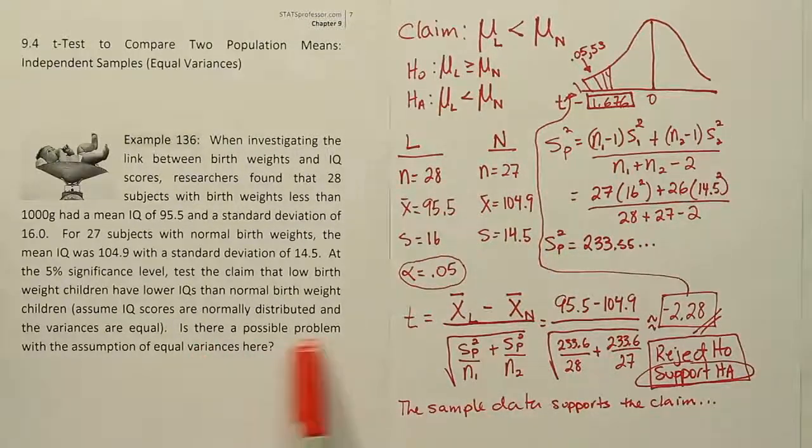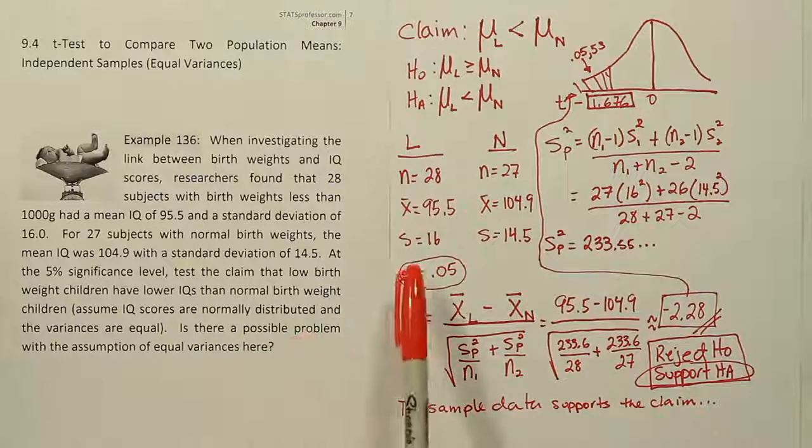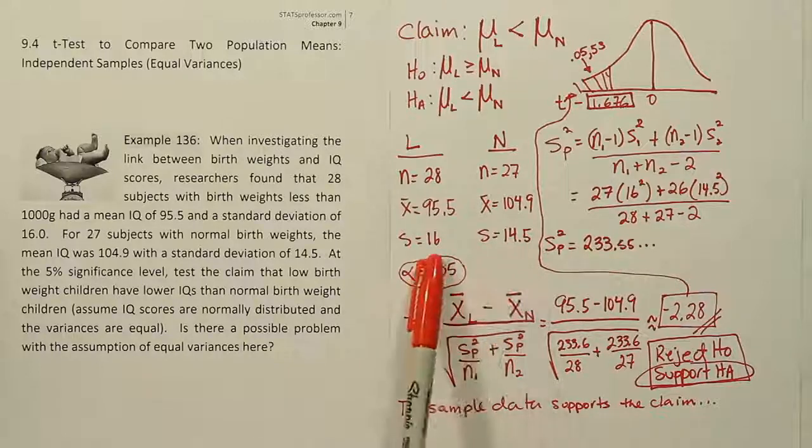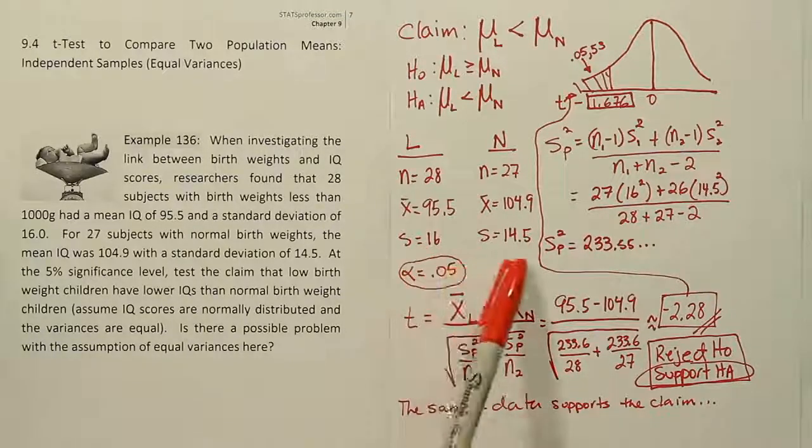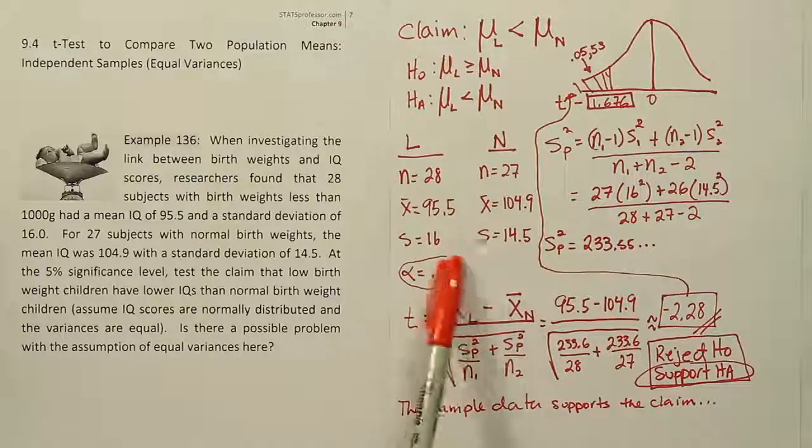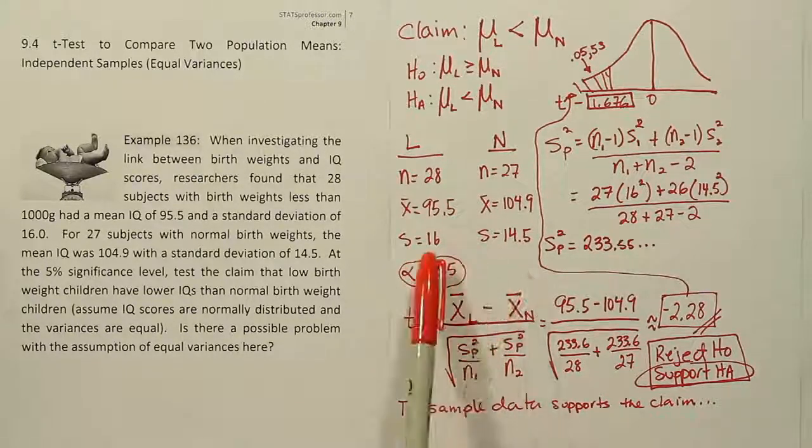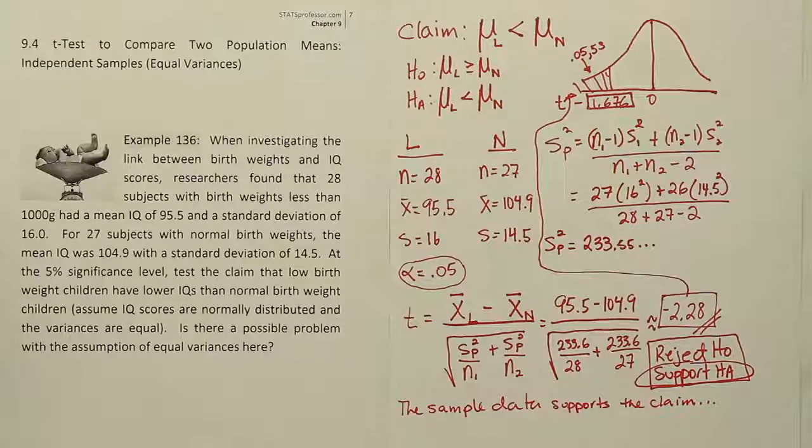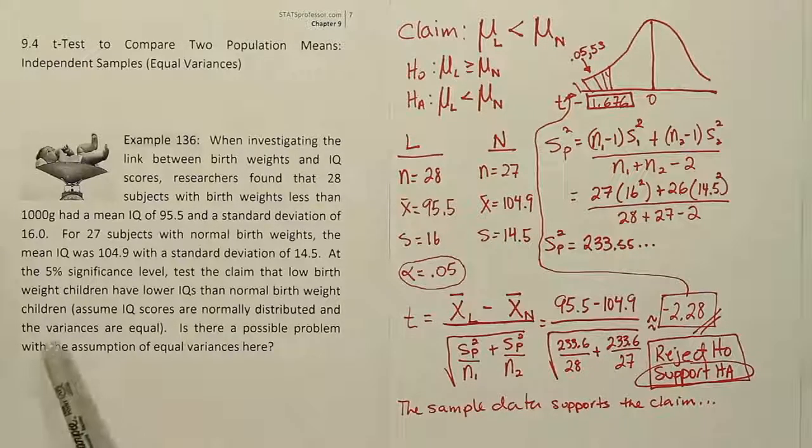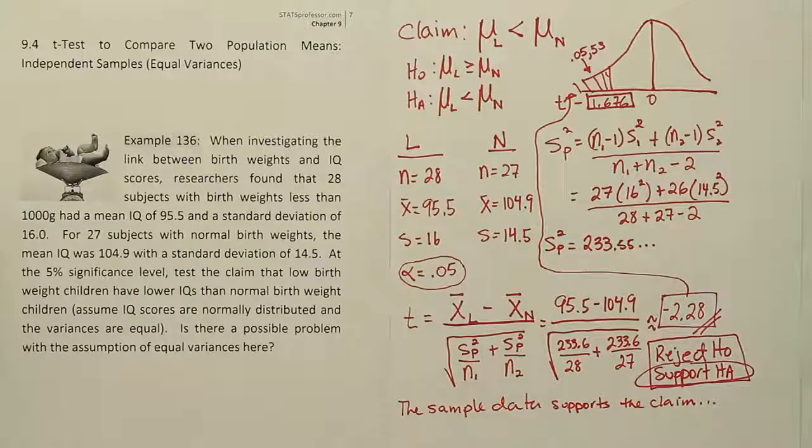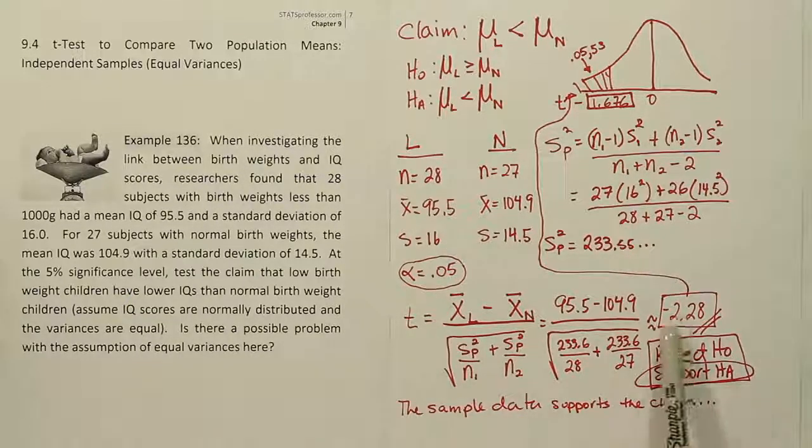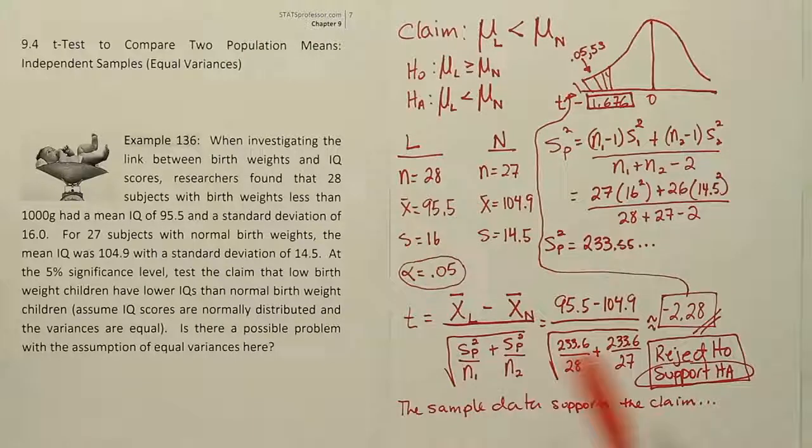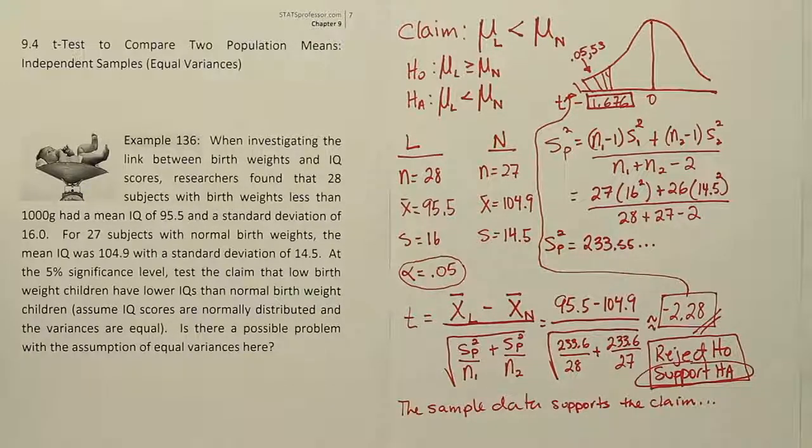And then finally the problem asks, is there a possible problem with the assumption of equal variances here? Well, if we look at the sample variances, there seems to be some difference between them. It's not a huge difference though. So it could be simply that, due to sampling error, there are some differences between the two sample standard deviations we found. However, to be sure, we're going to learn later on a procedure called the F test. We would be able to test to see if these variances or standard deviations seem to be significantly different or not. But in this problem, they asked us to assume they were equal. So we ran the test with that assumption and we came to our conclusion. And it looks like to me this test stat is pretty extreme anyway. So I think no matter what we did here, we would have the same conclusion that we should reject the null hypothesis and therefore support the alternative.